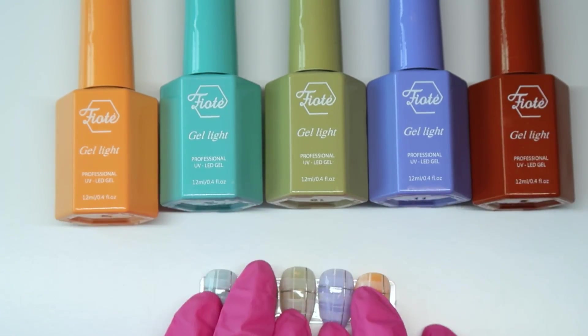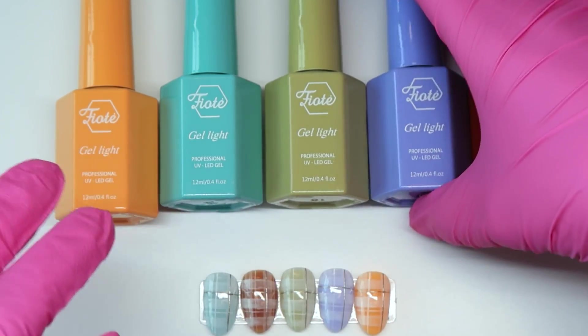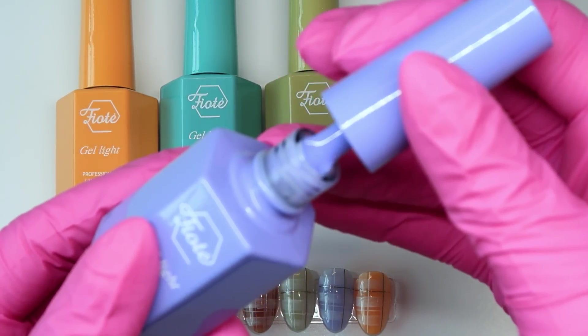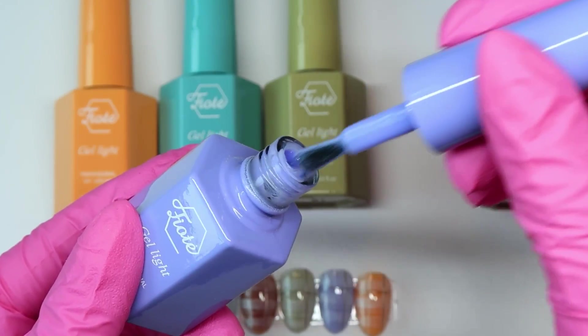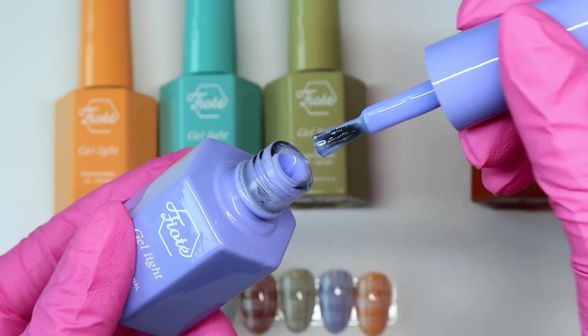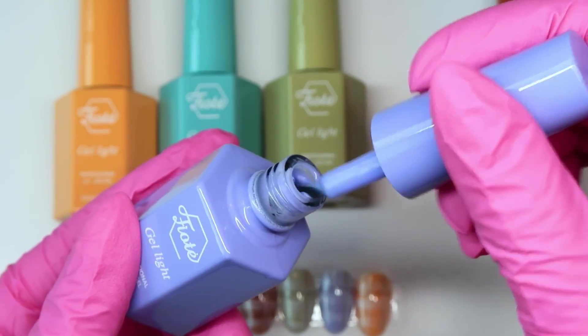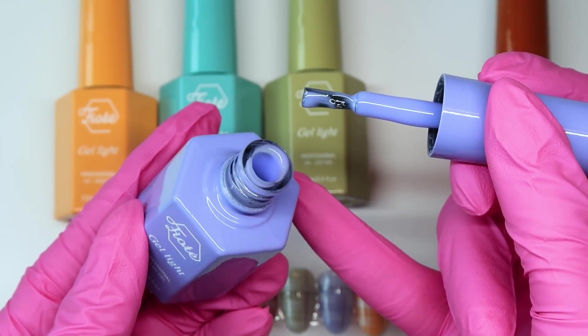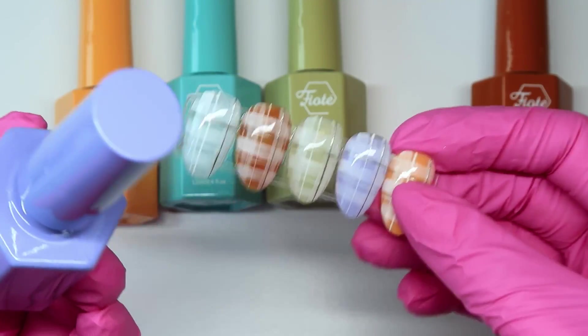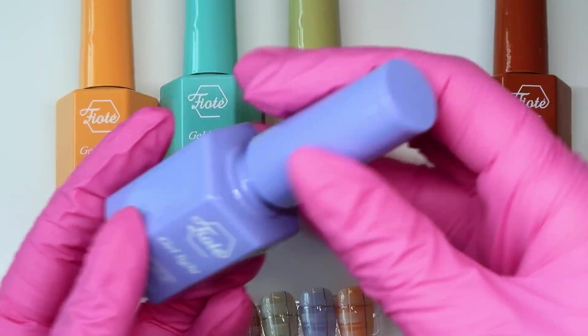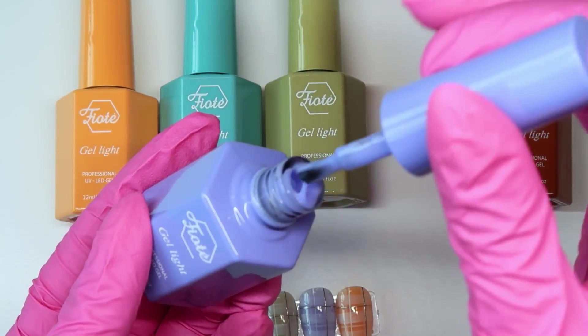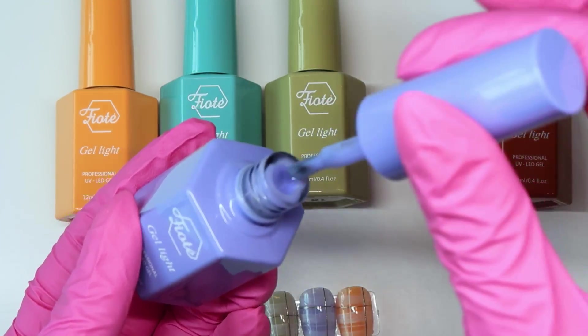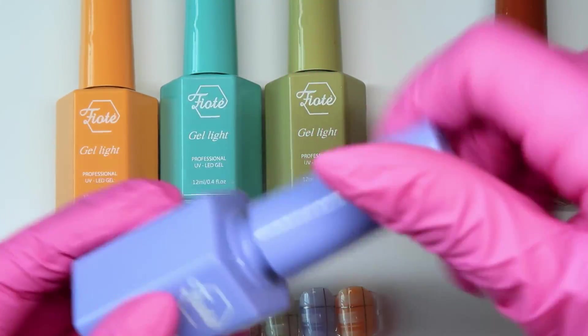I will just show you kind of what they look like straight out of the bottle here. So they do have some pigment to them definitely. They're not extremely sheer, they're just more milky. So you can build them up and one coat is all I used for the design, but if you did two coats or even three thin coats, you can build it up to more of an opaque color, but it's still going to have that kind of milkiness, which I love.